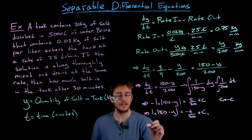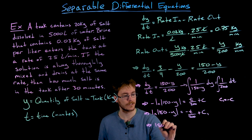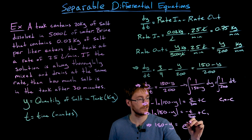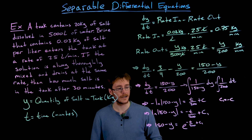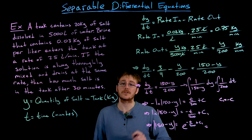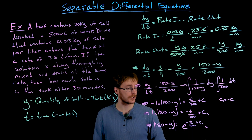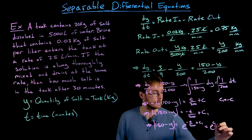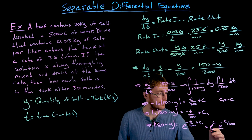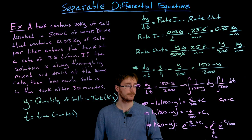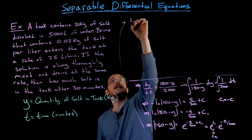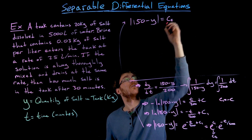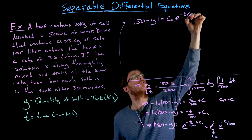Exponentiating both sides gives the absolute value of (150 minus y) equal to e to the power of (negative t/200 plus c₁). We can split the right-hand side as e^(c₁) times e^(negative t/200), and relabel e^(c₁) as c₂. So |150 minus y| = c₂ · e^(negative t/200).